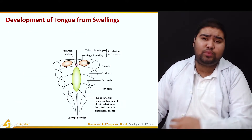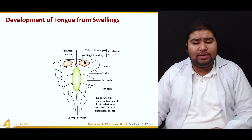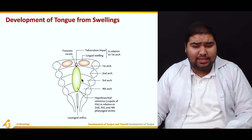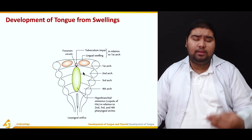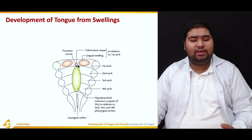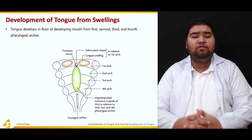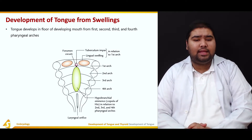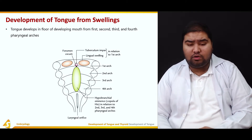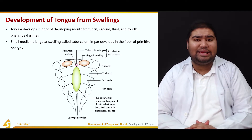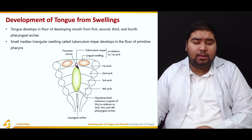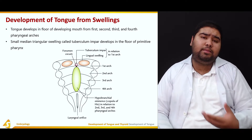Referring to the figure, these are the swellings I was referring to in the previous slide. These are the two lateral lingual swellings that develop in the mesenchyme of the first arch. This small triangular area is the tuberculum impar. This in green is the hypobranchial eminence that helps in the formation of the pharyngeal part of the tongue. The oral part is formed by the lingual swellings as well as the tuberculum impar. The tongue develops in the floor of the developing mouth from the first, second, third, and fourth pharyngeal arches. Initially a small median triangular swelling — the tuberculum impar — develops in the floor of the primitive pharynx, and its appearance begins the development of the tongue.